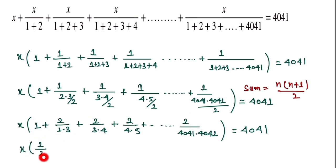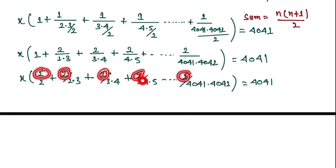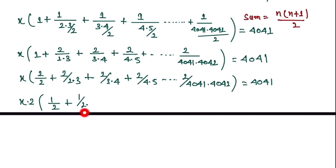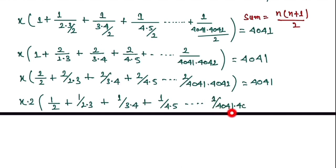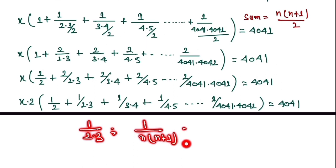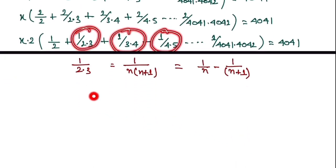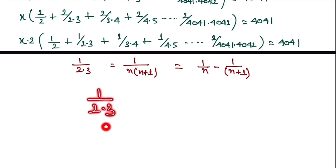Since 2 is common throughout, we factor it out: 2x times (1/2 + 1/(2·3) + 1/(3·4) + 1/(4·5) + ... + 1/(4041·4042)) = 4041. Now we apply the partial fraction identity: 1/(n(n+1)) = 1/n − 1/(n+1). Also, 1/2 itself can be written as 1/1 − 1/2.